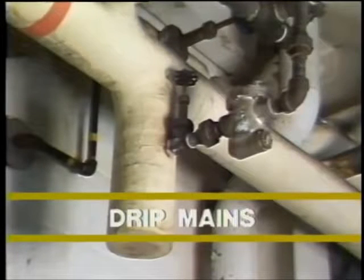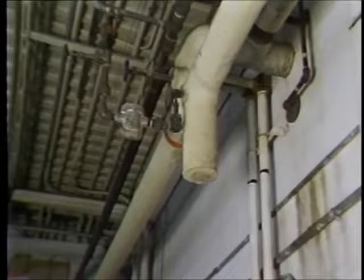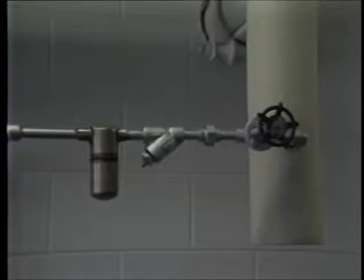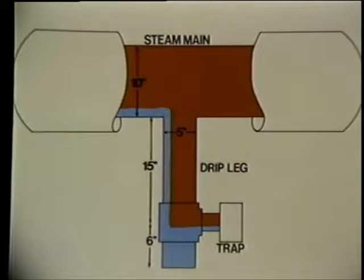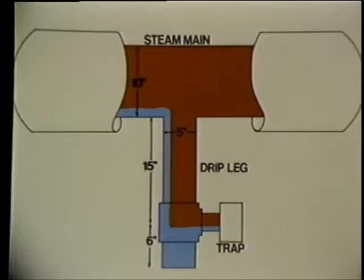Drip legs and drip traps must be installed to automatically drain the mains of condensate. Drip legs divert the condensate from the fast moving steam in the mains and provide a pressure differential during startup, enabling the trap to discharge the condensate to a gravity return. Drip legs should be the same size as the steam mains on pipe sizes up to 4 inches in diameter. Above 4 inches, they should be at least one half the size of the main, but never less than 4 inches. The depth should be at least one and one half times the diameter of the main, but never less than 10 inches.